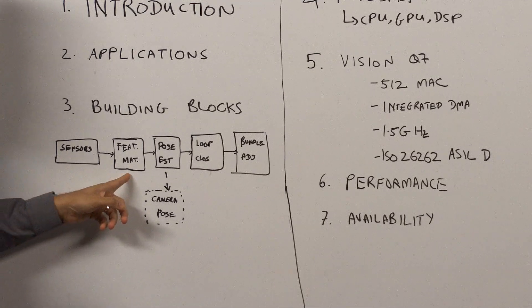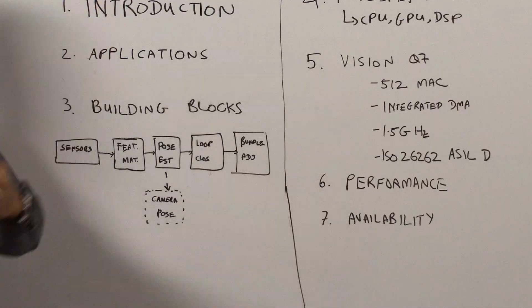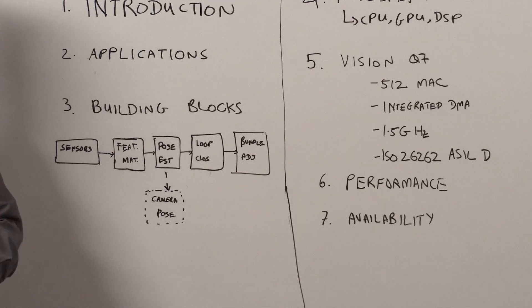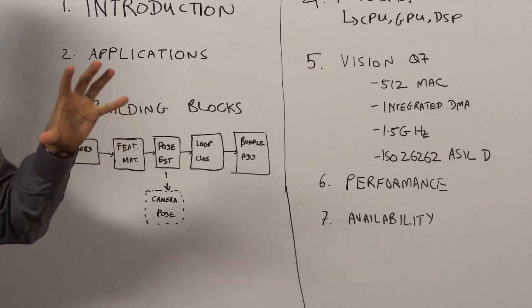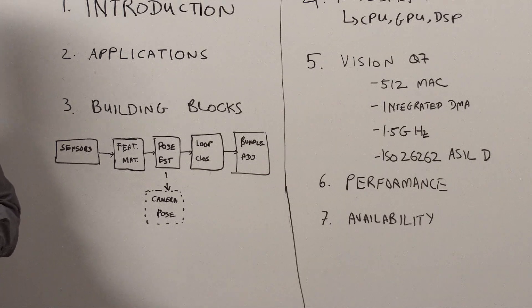This is fed into a feature matching or a keypoint extraction block. The idea of this block is for the sensor to provide information about where there are different interesting points in the scene. So for example, edges and lines and corners that can be found in one frame and then to correspond them to the same points in frame number two.